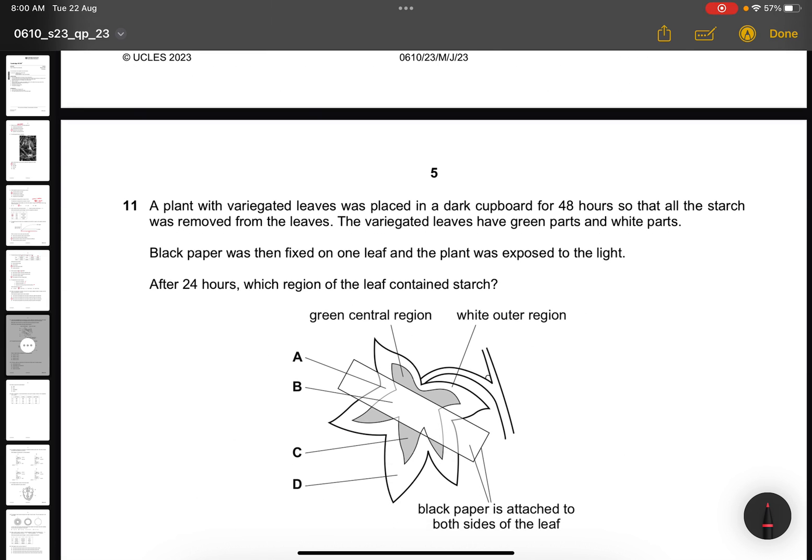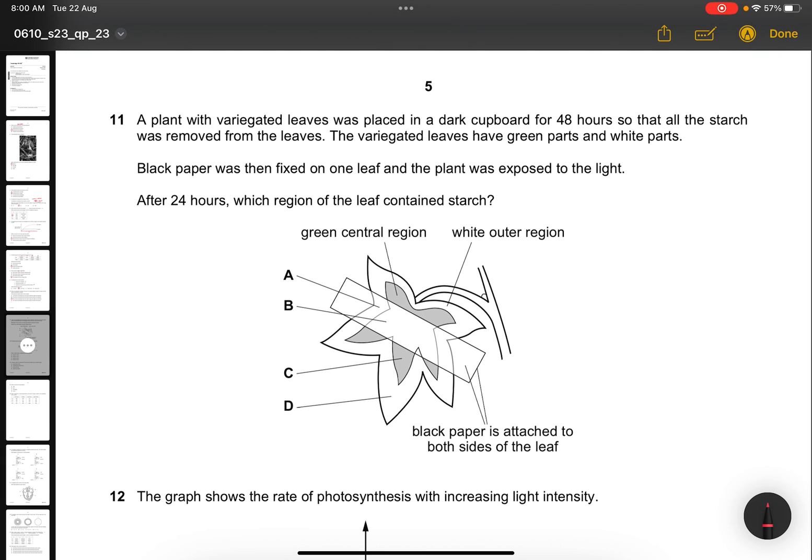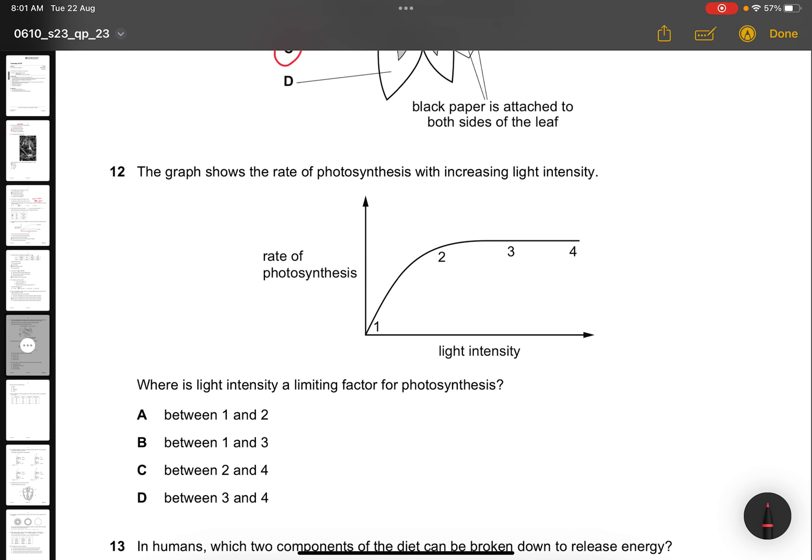Question 11. A plant with variegated leaves was placed in a dark cardboard for 48 hours so that all of the starch was removed from the leaves. The variegated leaves have green parts and white parts. Black paper was then fixed on one leaf and the plant was exposed to light. After 24 hours, which region of the leaf contains starch? The answer is C, because the green part can be tested for starch due to chloroplast. Question 12. The graph shows the rate of photosynthesis with increasing light intensity. Where is the light intensity a limiting factor for photosynthesis? Always when it's increasing much larger. So between one and two.